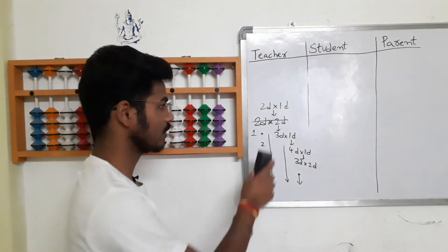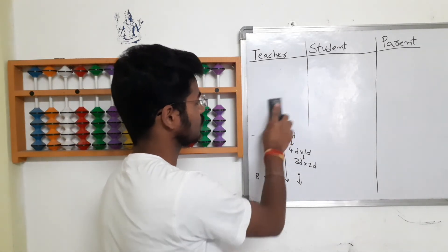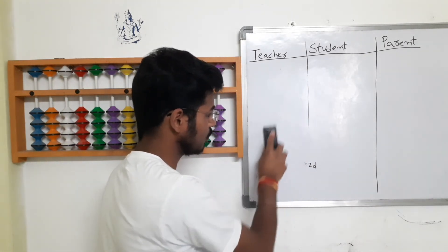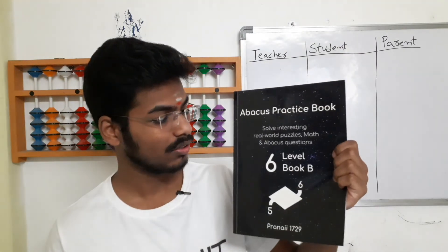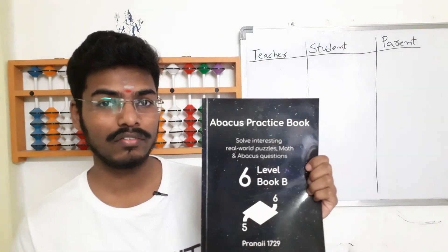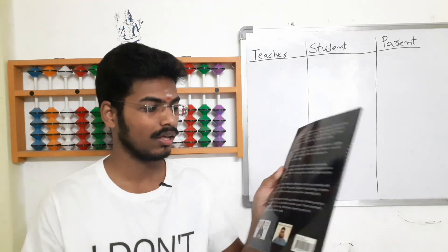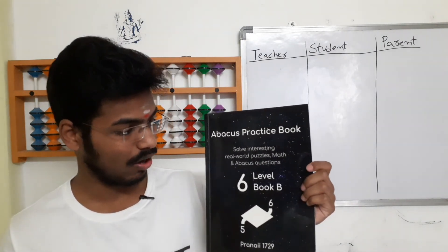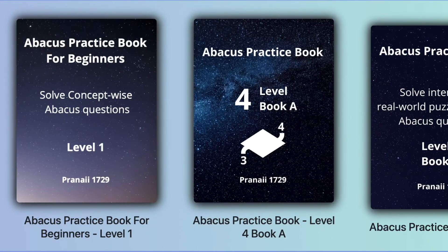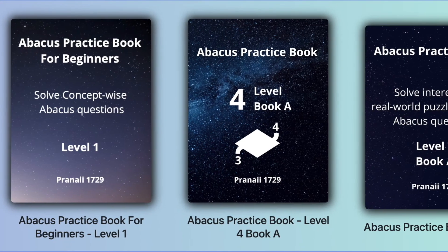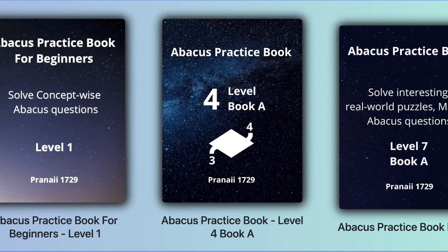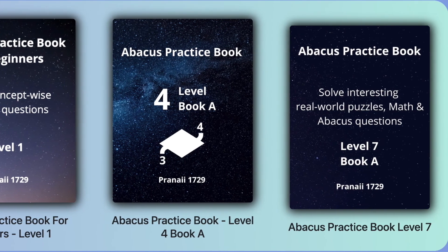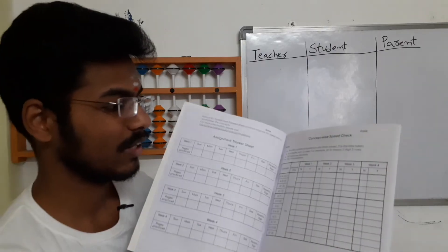All levels will have two books — Book A and Book B. This is the front side and this is the back side. All the books follow the same format and have a galaxy theme. There are many tables in this book which I'll be explaining.